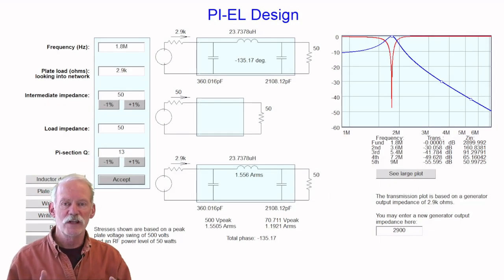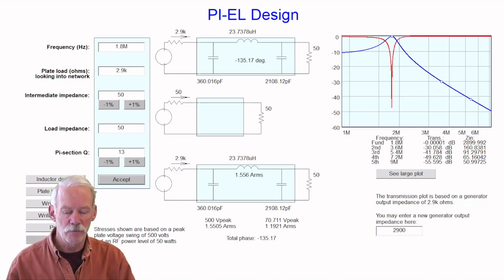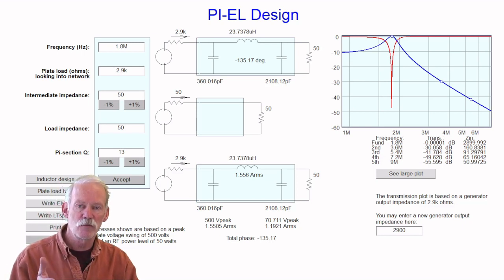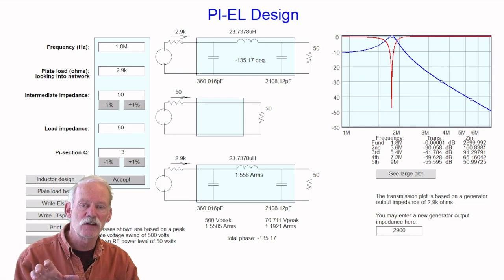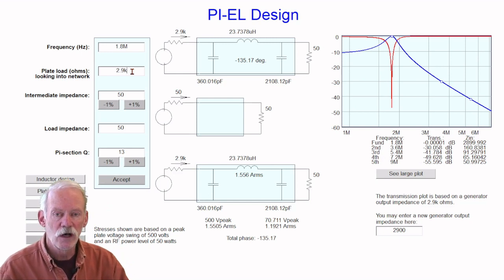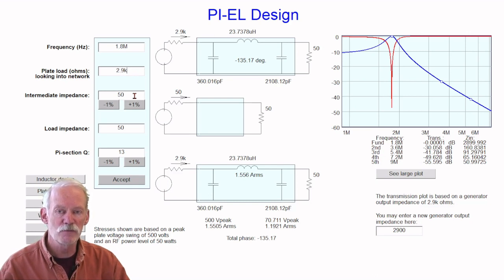There are a number of tools I could have used to design my pi network. I'm going to use Pi-L, and I'll put a link to this below this video. But it's kind of simple. There's only a few values I need to do this. I need to enter my frequency in megahertz, and I'm going to enter the bottom of the 160 meter band, and this will give me the largest capacitance I'm going to need throughout this band. I'll also add 2.9 kilohms for the load impedance, the plate load impedance, going into the network. The intermediate impedance is an important value for designing a pi-L network, but for a pi network, it's going to be the same as my output impedance. So I'll put in 50 ohms for that and also 50 ohms for my load impedance.